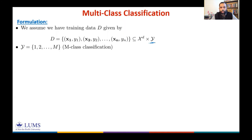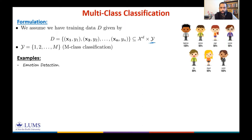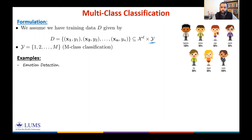For example, a simple multi-class classification problem would be emotion detection. We can have different emotions — anger, sadness, happiness, and so on. Given a photo, you want to find out the emotion from the photo. This is a multi-class classification problem.